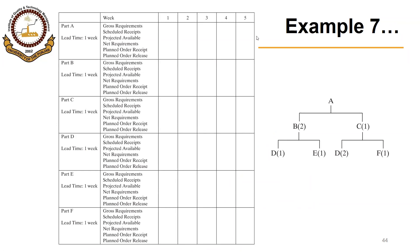So the gross requirements for product A are 100 in week 5. There are no scheduled receipts, no previous balances, so we will have the net requirements to be 100 as well. Planned order receipt will be 100, so based on lead time of 1 week, planned order release will be 100 in week 4.